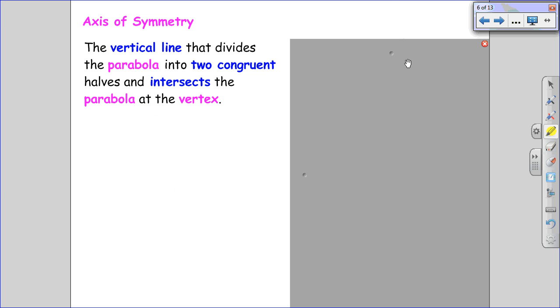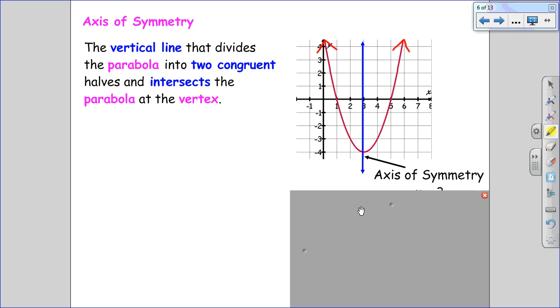The axis of symmetry is a vertical line that divides the parabola into two congruent halves and intersects the parabola at the vertex. Now you'll see I've drawn a vertical line on the graph to indicate the axis of symmetry occurs when x is 3. That's the x-coordinate of the vertex. And the axis of symmetry always needs the x equals in front of it. It's not a number, it's the equation of a vertical line, so it requires a variable.